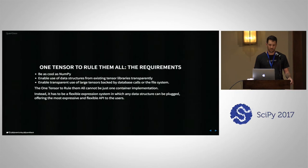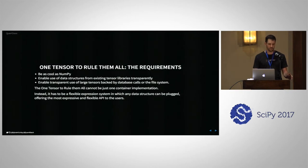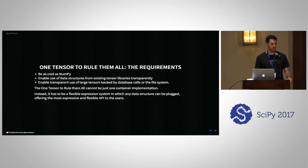We need to enable use of data structures from existing tensor libraries transparently. Another key missing feature of the current ecosystem is that as soon as you move from in-memory computation to out-of-core computation — distributing things across multiple computers — you hit a cliff and need to use another framework and reimplement everything. We want to enable transparent use of large tensors backed by database calls or file system operations. The one tensor to rule them all must be a flexible expression system in which any data structure can be plugged, decoupling the way we operate on data from the origin of the data.